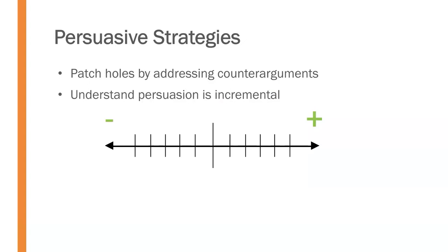We also need to remember that persuasion is incremental — it doesn't happen all at once. Persuasion doesn't only occur when you cause someone to do a complete turnaround in their view. It happens a little bit at a time. If we can get somebody to even reconsider their ideas or just think about it, that should be considered a success. Persuasion happens in increments, little bits at a time, over time.